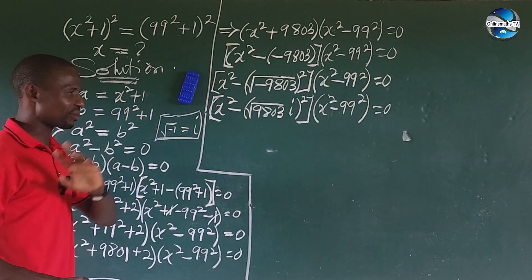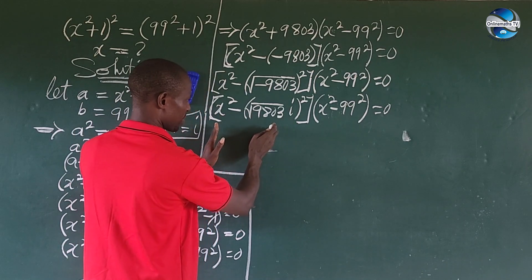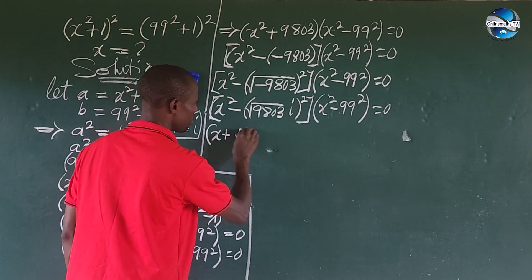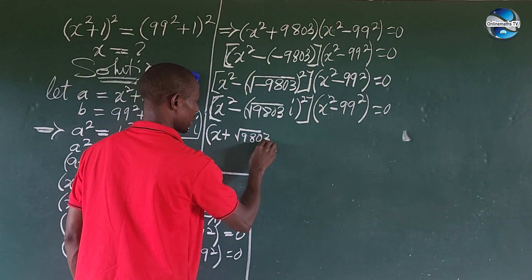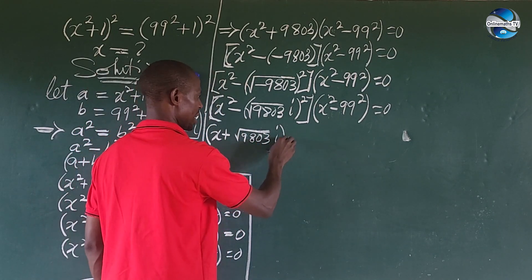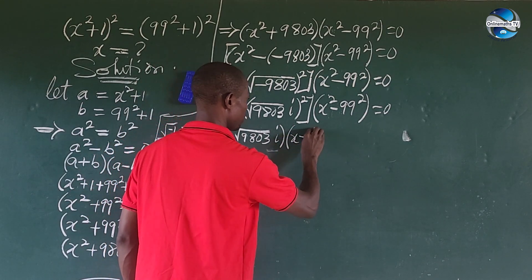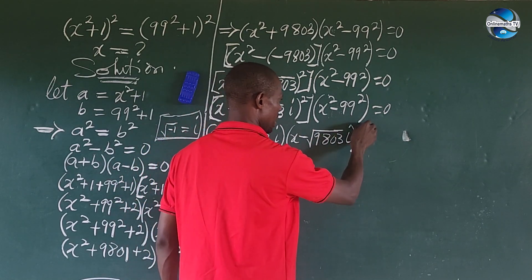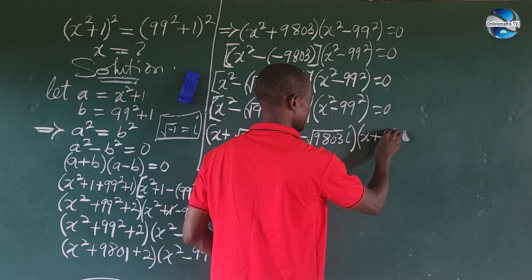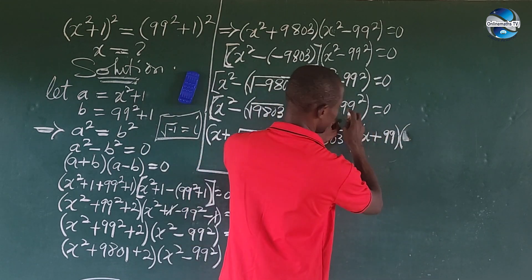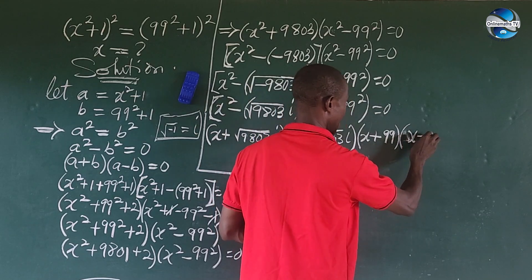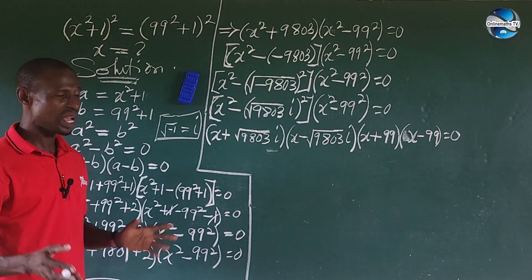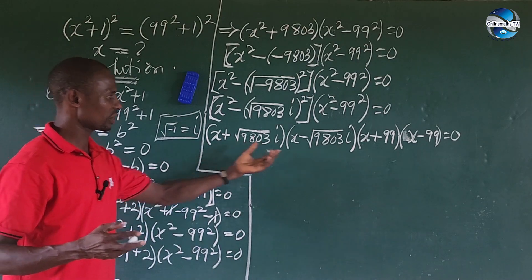We can apply the difference of two squares to each of these quantities. So we rewrite the full expression as: (x minus square root of 9,803 times iota)(x plus square root of 9,803 times iota)(x plus 99)(x minus 99) equal to 0. We now have our four factors.